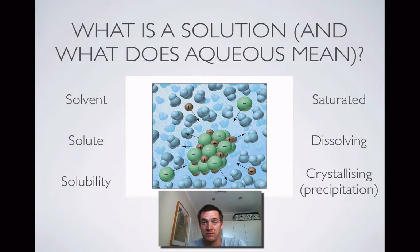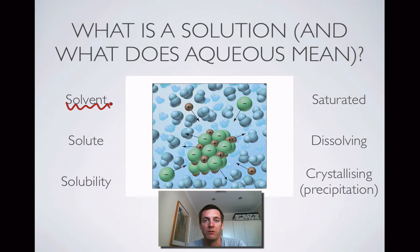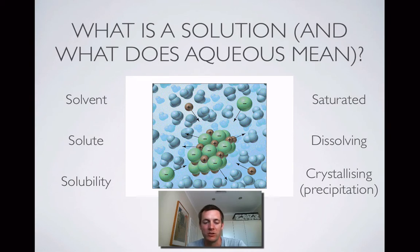As a rule of thumb, though it's not always true, the solute will be the solid and the solvent will be the liquid. However, you can have solutions made up of two liquids, and in those cases the solvent is just the one that dominates — the one there's more of. So if I had a little bit of water and mixed it with lots of ethanol, that would be a solution of water in ethanol: the ethanol would be the solvent and the water would be the solute.